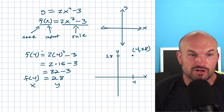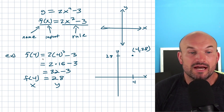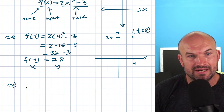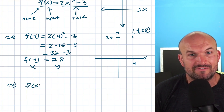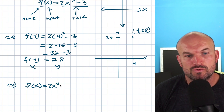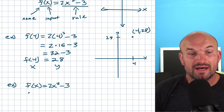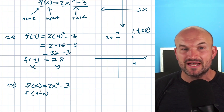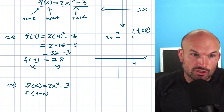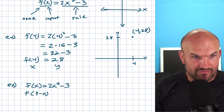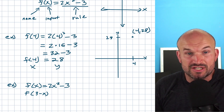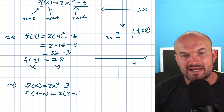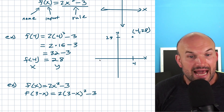We can actually plug anything into a function — it doesn't just have to be a number. Using the same function f of x equals 2x squared minus 3, what if we need to find f of (3 minus x)? Just like when we had a 4 inside the function notation and replaced x with 4, we do the same thing here. This would be 2 times the quantity (3 minus x) squared minus 3.